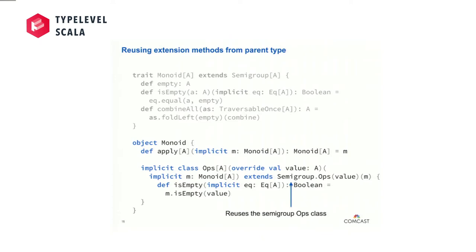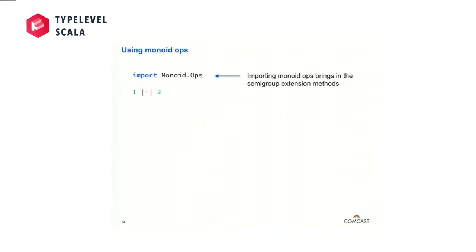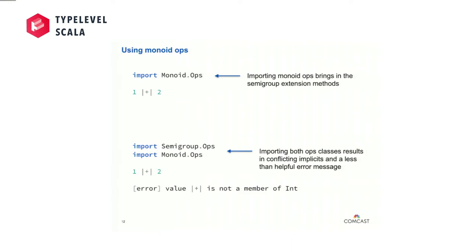Once we admit subtype polymorphism, we're going to want all of the same functions. I was tempted to phrase this talk in the form of 'if you give a mouse a cookie' — because once we've done all this infix notation for semigroups, we're going to want it for monoids too. In the monoid companion object we get all the same boilerplate, but we don't have to redefine the boilerplate for semigroup operations — we can just extend the semigroup ops class. But this also gives us a very challenging thing for folks new to working with libraries like CATS: they import conflicting implicits — both semigroup ops and monoid ops — and get a completely unhelpful error message saying |+| is not a member of int. What's happening is both implicit conversions conflict, cancel out, and we get no help from the compiler.